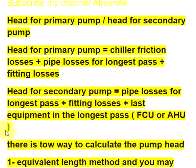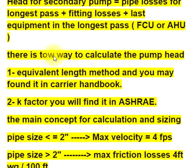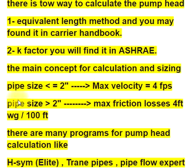There are two ways to calculate the pump head: the equivalent length method, found in the Carrier Handbook, and the 2K factor method, found in ASHRAE. The main concept for pipe sizing: max velocity equals 4 fps, and max friction losses equal 4 feet WG per 100 feet.